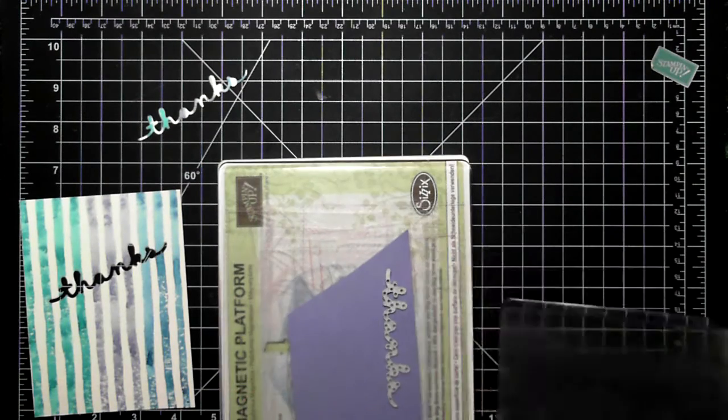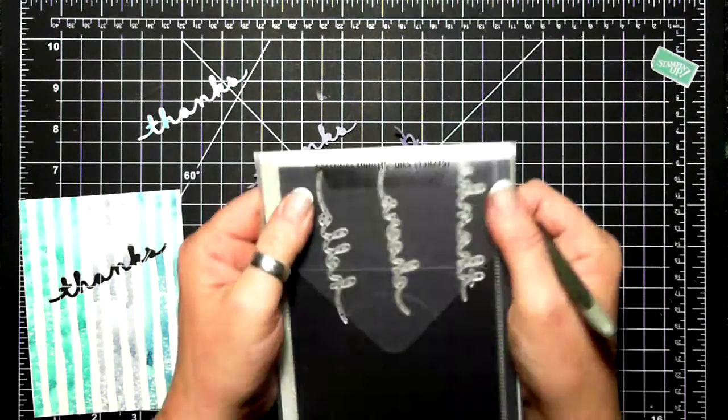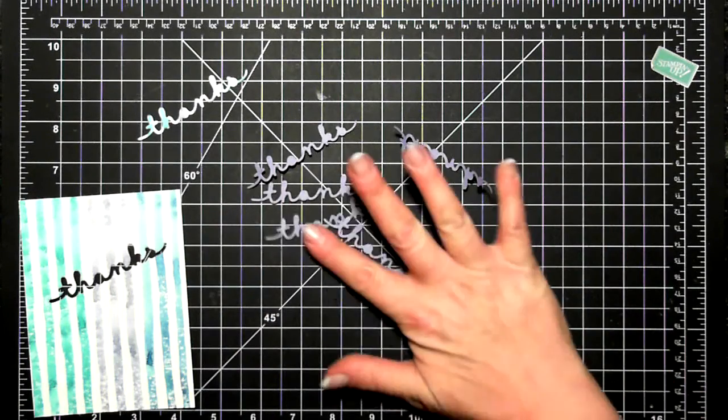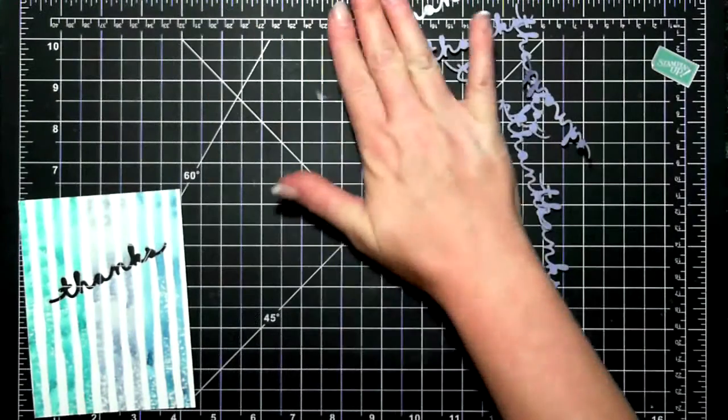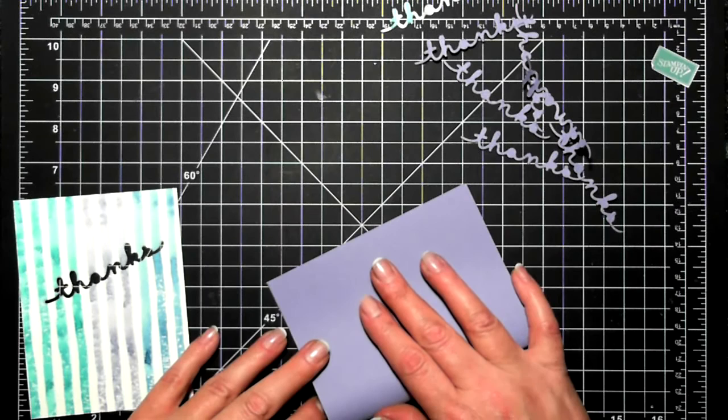I'm using wisteria wonder again as a little scrap, and I cut wisteria wonder out six times. I know it seems a little excessive, but it actually worked out. My card base today is wisteria wonder, and that's the reason why I chose wisteria wonder scraps for those six thanks.